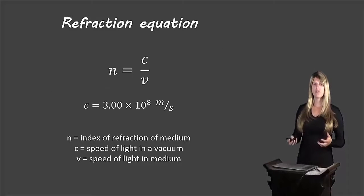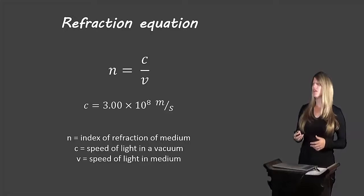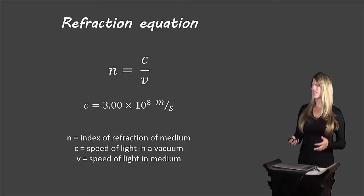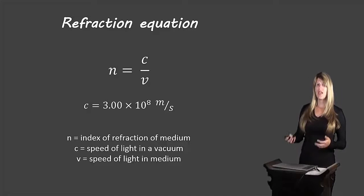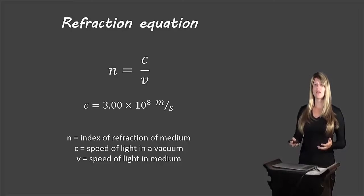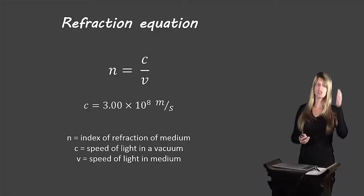Let's review the refraction equation. n equals c over v, where n is the index of refraction of the medium, c is the speed of light in the vacuum, and v is the speed of light in the medium. A reminder that the speed of light in a vacuum is 3.00 times 10 to the 8 meters per second. You won't always be given that in the question, so that's a good value to memorize.